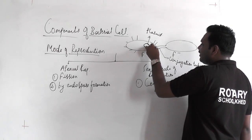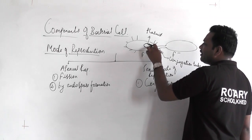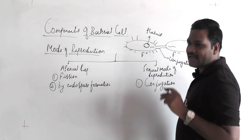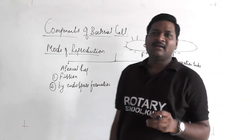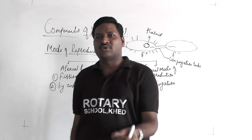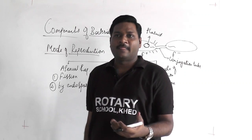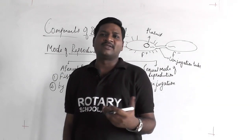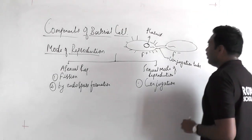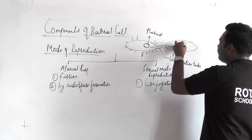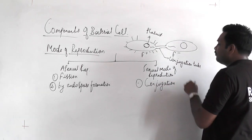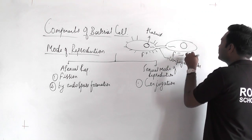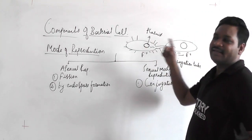Plasmids are extra chromosomal sets of DNA that are capable of replicating autonomously. Once the plasmid fragment enters the F minus bacterial cell, it will multiply and form another plasmid, converting the F minus into F plus. This is how bacteria reproduce by conjugation. Another way of reproduction is transduction.